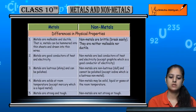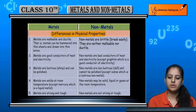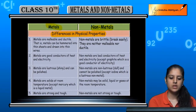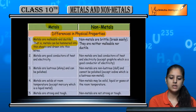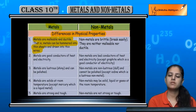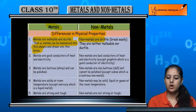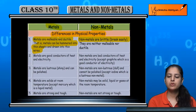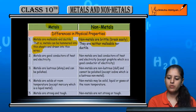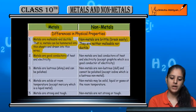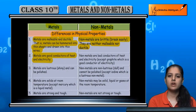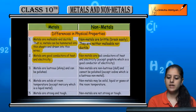Now let's look at some comparisons — the differences in physical properties between metals and non-metals. The first difference: metals are malleable and ductile — they can be hammered into sheets and drawn into wires. But non-metals are brittle — they break easily and are neither malleable nor ductile.